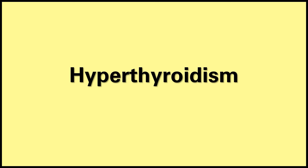Normally, the hypothalamus detects low levels of thyroid hormone in the blood and secretes thyrotropin-releasing hormone, which causes the pituitary to secrete thyroid-stimulating hormone (TSH), also called thyrotropin. This causes the thyroid gland to secrete T3 and T4. In hyperthyroidism, there's an excess of these hormones. If the problem is with the thyroid itself, it's called primary hyperthyroidism. If the pituitary is the problem, it's secondary hyperthyroidism.